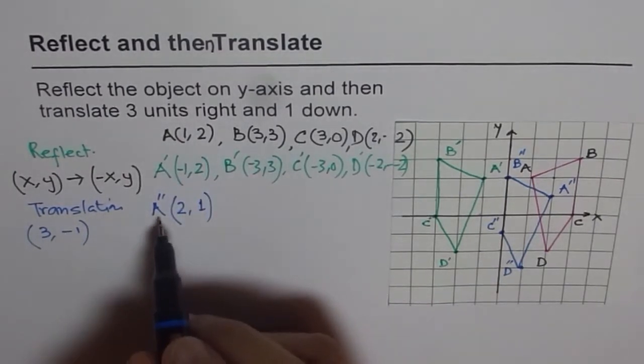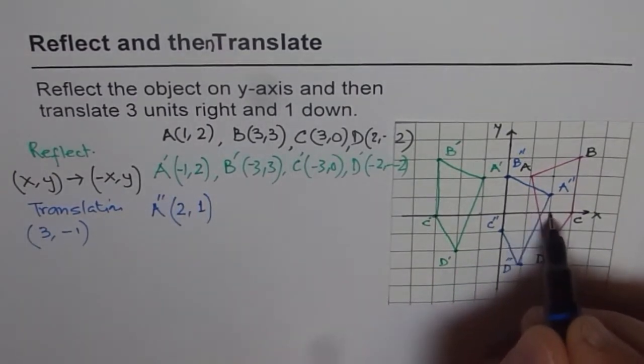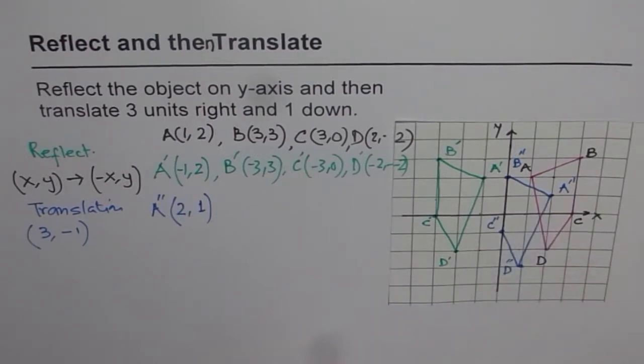And when you take away 1 from 2, you get 1, right? So the final location should be at (2, 1) for A double dash. So you can check. Do you see that? So like that, you can get it from the coordinates also. So this is the second method of doing it.